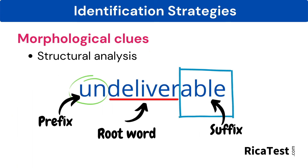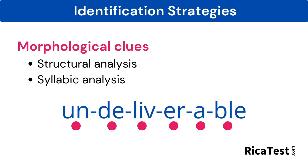It's important to note that two parts make up morphological clues. The first is structural analysis, which is analyzing the parts of the word to understand its meaning — what the student from the previous example just accomplished. Second is recognizing a word by its syllables, which is called syllabic analysis.